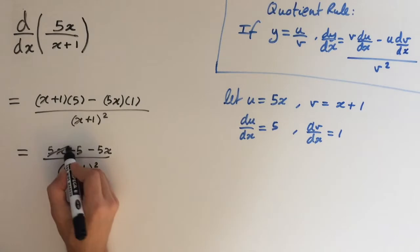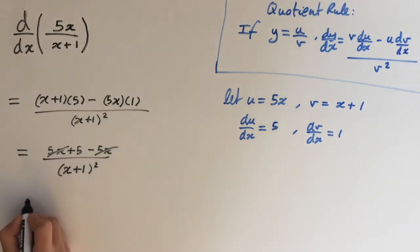So you can see that the 5x's are going to cancel out. And what we're left with is just 5 over x plus 1 squared. So there you go, the derivative for 5x over x plus 1.